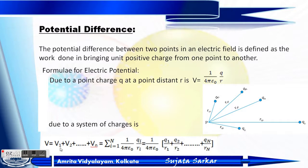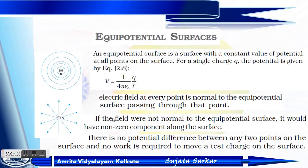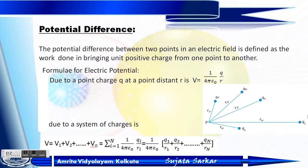For a system of charges, we can write V equals V1 plus V2 plus dot dot dot Vn. For discrete charges, this is the summation from 1 to n of one over four pi epsilon-naught times q_i over r_i. This expands as one over four pi epsilon-naught times (q1/r1 + q2/r2 + ... + qn/rn).